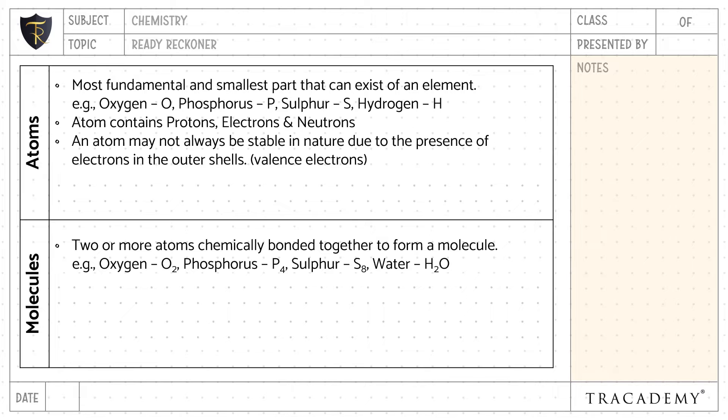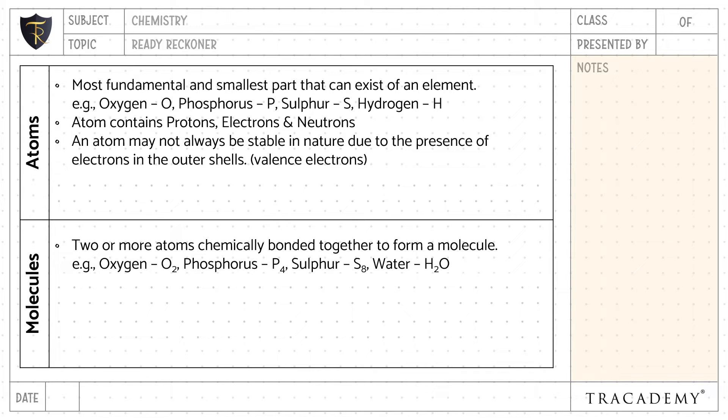An atom contains protons, electrons, and neutrons. An atom may not always be stable in nature due to the presence of electrons in the outer shell, which is called the valence electron.